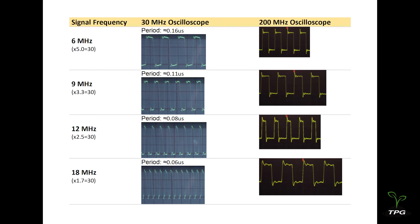For this particular oscilloscope under test, the 9 MHz square wave looks pretty good, and the 12 MHz square wave is still recognizable and workable.